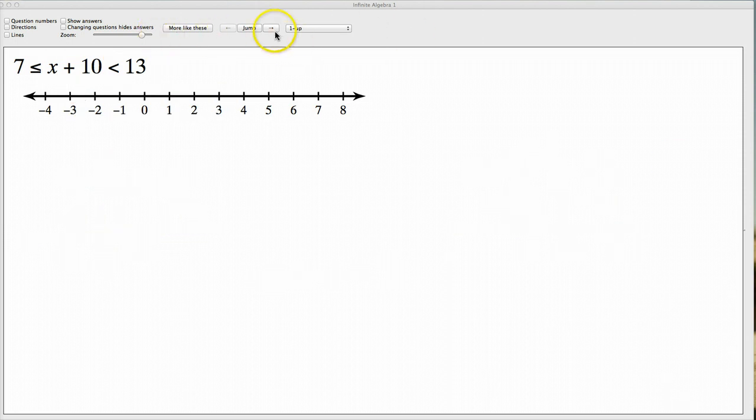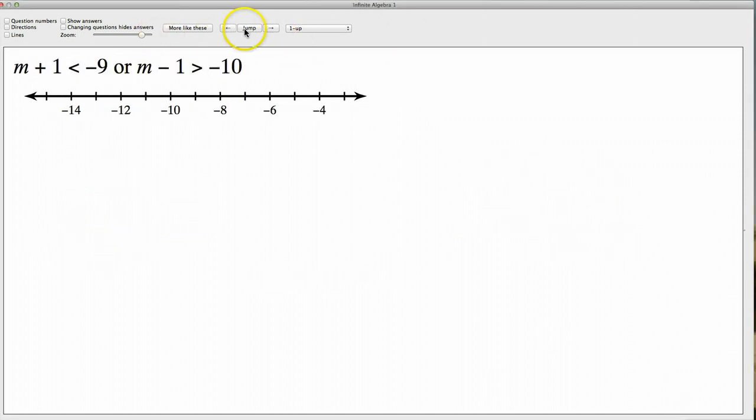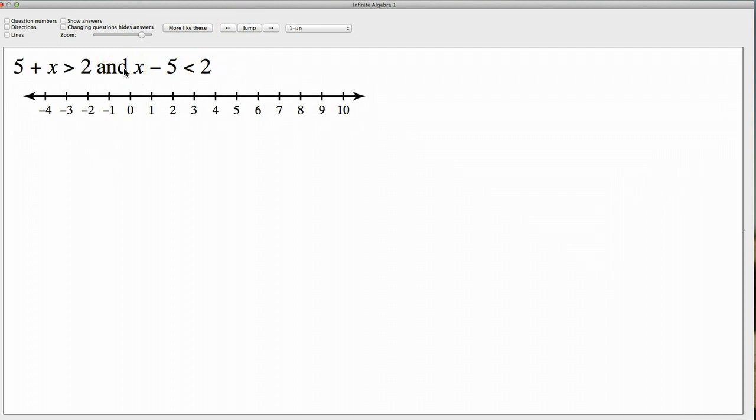This AND statement works exactly the same thing, exactly the same as the other. You'll still graph it. It'll still make a barbell. The only difference is you don't have to write the body down twice. You just do X plus 5 is greater than 2, and X minus 5 is less than 2.